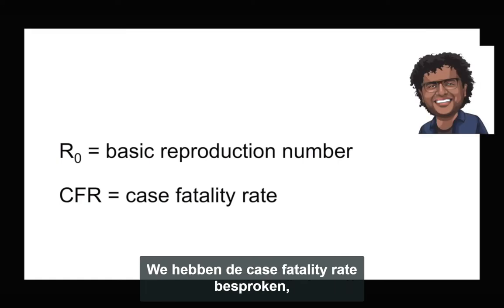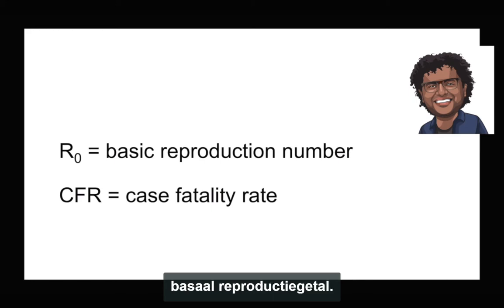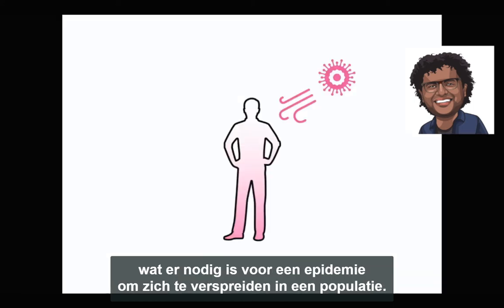Now that we have discussed the case fatality rate, let's move on to talking about the famous and mysterious metric called the basic reproduction number. But before we begin, let's imagine what it takes for an epidemic to spread in a population.